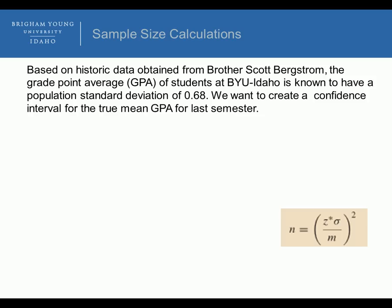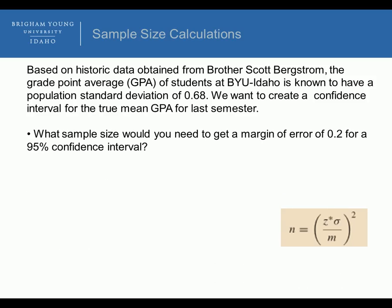Based on historic data obtained from Brother Scott Bergstrom, the grade point average of students at BYU-Idaho is known to have a population standard deviation of 0.68. We want to create a confidence interval for the true mean GPA for last semester. What sample size would you need to get a margin of error of 0.02 for a 95% confidence interval?